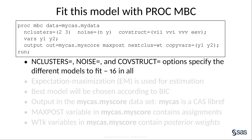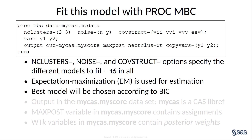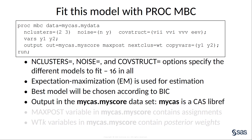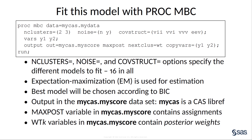You'll see more details about covariance structures shortly. Each element in these lists will be used in combination with the elements from the other lists, giving 16 models in all. The procedure uses expectation maximization, or EM, to find maximum likelihood estimates, and chooses the best model as the model that has the best Bayesian information criterion, or BIC. The output statement directs the procedure to store information in the MyCas.MyScore output data set, where MyCas is a CAS LibRef. This output data set will contain the cluster assignments for each observation, as well as posterior weights, which are the soft clustering values for each observation.